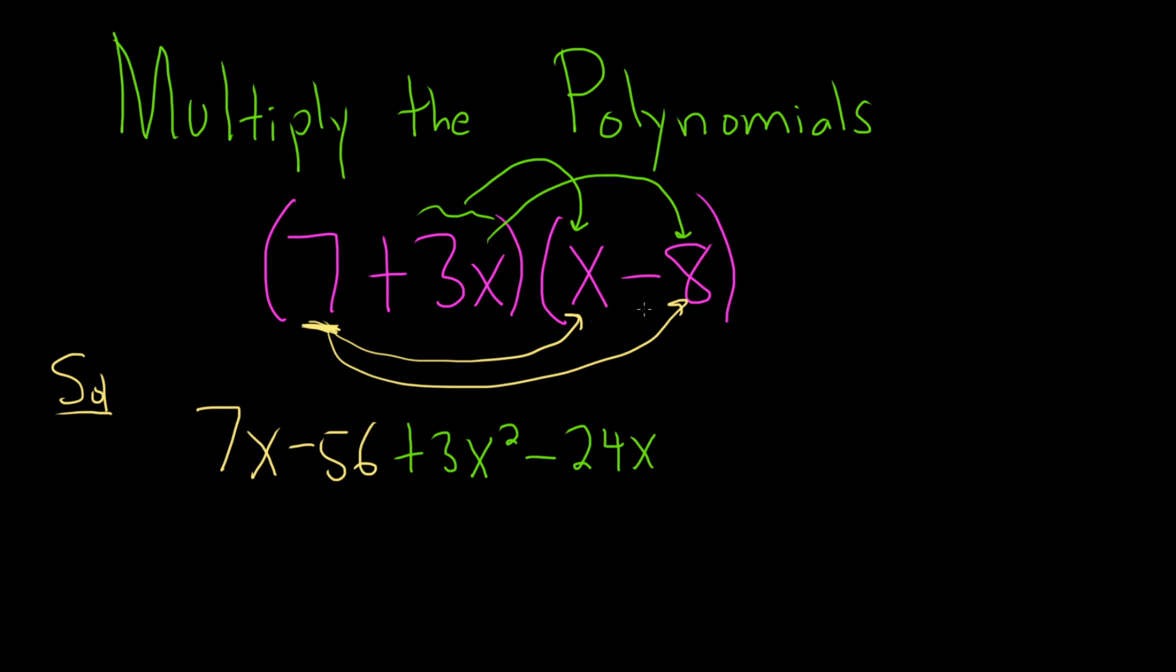For some reason, that was difficult. 3 times 8 is 24. OK, now we can just clean stuff up. So this is 7x. Oh, we can combine the x's here. Look at this. 7x minus 24x is going to give us minus 17x. And then we have minus 56 plus 3x squared.